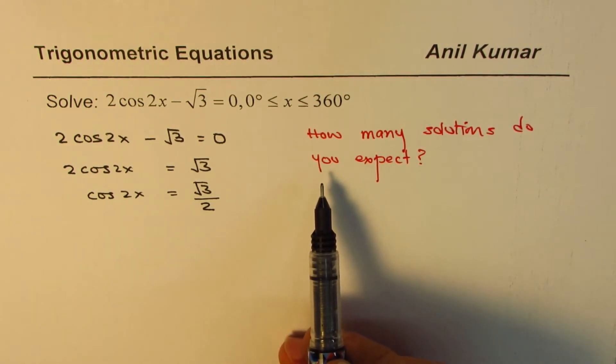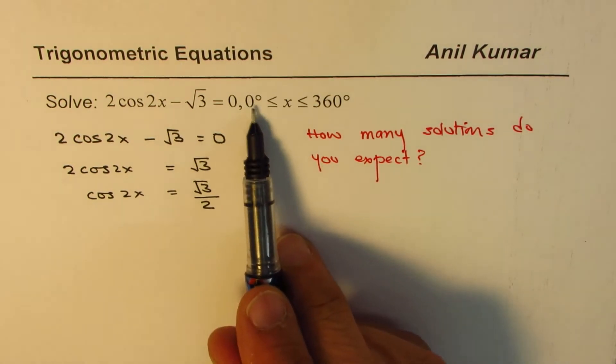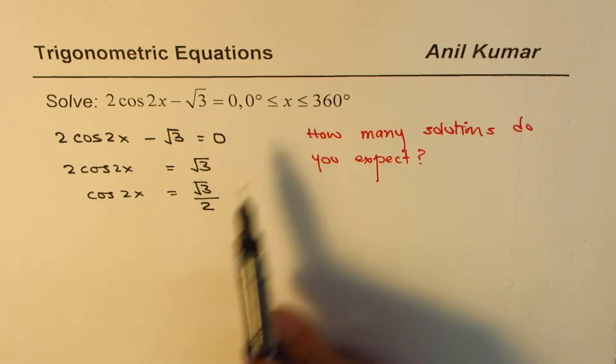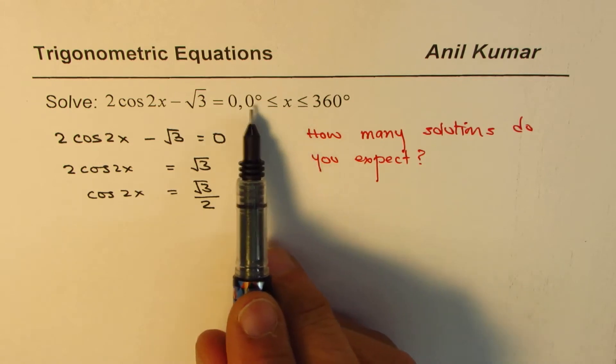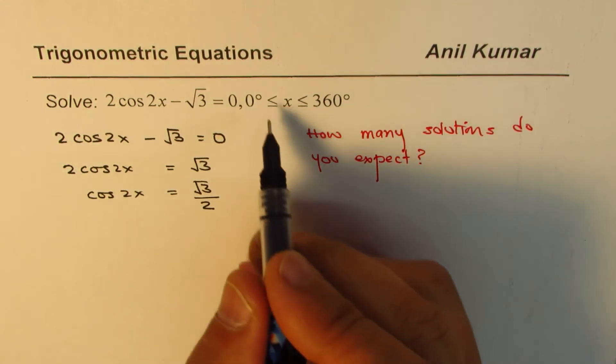Now most of you or I should say some of you might say two solutions because we are working in the domain 0 to 360 degrees, right? But really speaking the domain here is not this for 2x. We are working for cos 2x. So let's look into the domain.